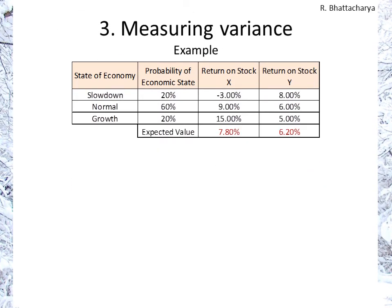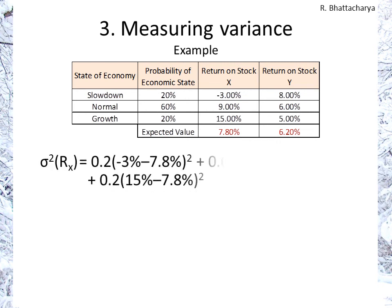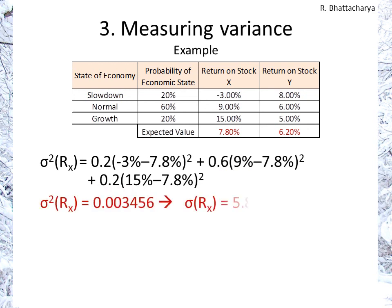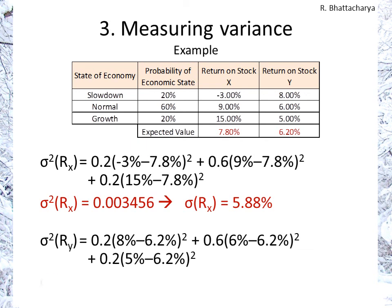Variance uses the expected values we calculated — 7.8% and 6.2% — in the formula. For X: 0.2 × (−3% − 7.8%)² + 0.6 × (9% − 7.8%)² + 0.2 × (15% − 7.8%)², giving a variance of 0.003456. The square root gives a standard deviation of 0.0588, or 5.88%. For Y, the same process yields a variance of 0.000096 and a standard deviation of 0.98%. Thank you very much.